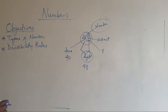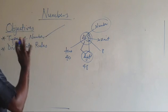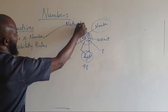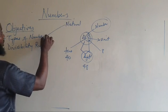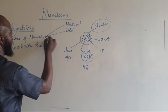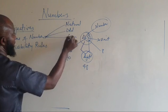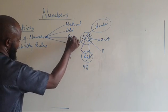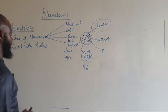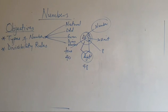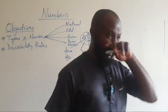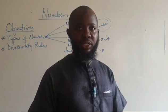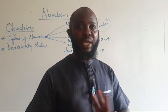Having said that, we now go to types of numbers. We'll be looking at different types of numbers. In this video we're going to be looking at natural numbers, odd numbers, even numbers, and prime numbers. Let me talk about natural numbers. Natural numbers — they are counting numbers. That's the meaning, literally. Counting numbers are called natural numbers.